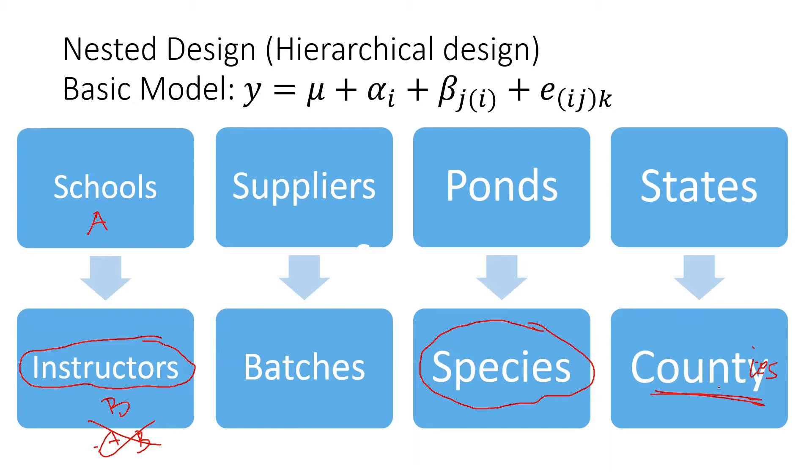The model is written as this: alpha is the effect of the first level or first hierarchy. There's the effect of schools on somebody's learning, effects of suppliers on material quality, effect of pond quality, effects of state on living standards. Then beta j, which is nested in i, is factor A effect. This one is factor B. It's written this way because the interaction doesn't make sense, so the model does not contain the interaction.